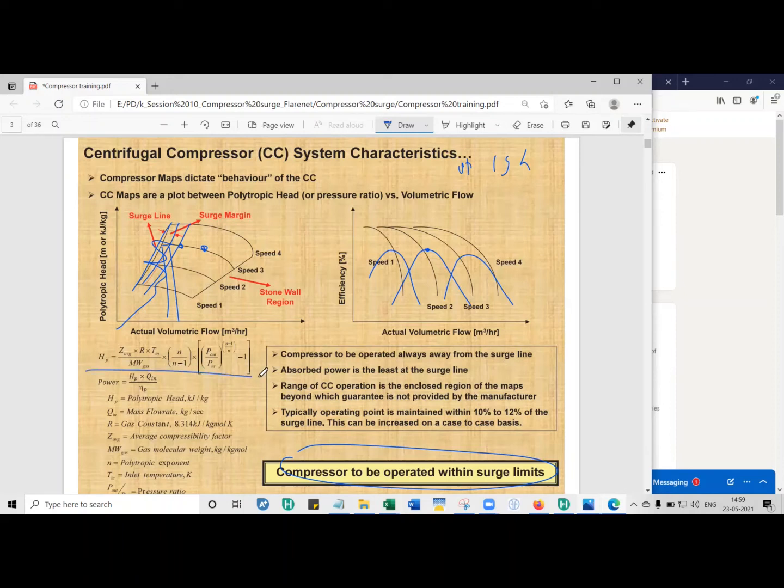As shown here with these two expressions, what we are doing is taking into account the changes in density through the gas compressibility factor, the inlet temperature, molecular weight, polytropic exponent, and the pressure ratio.